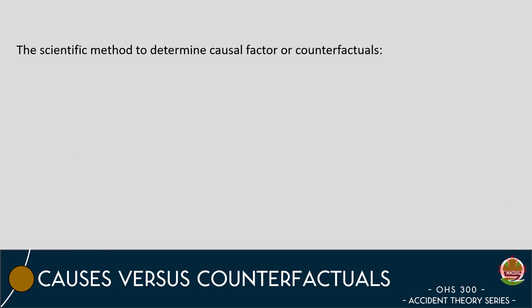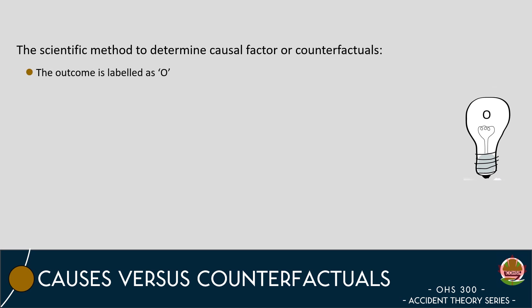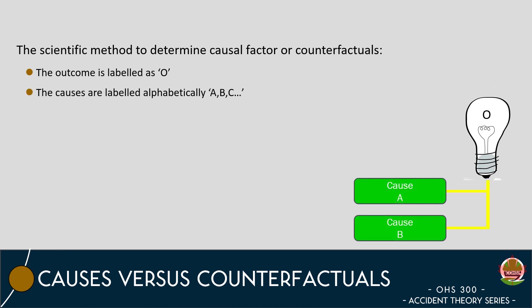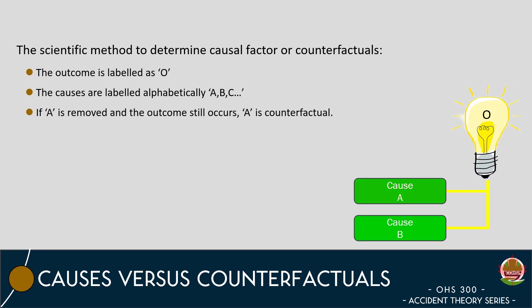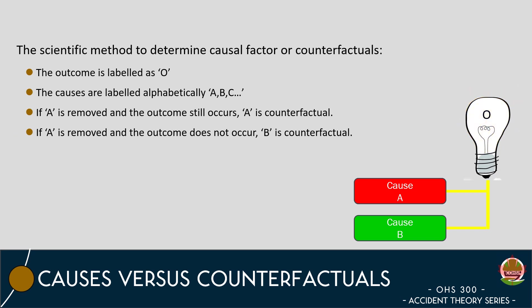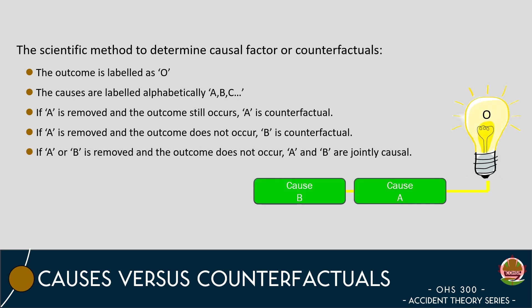The scientific method to determine whether an event is causal or counterfactual involves considering the outcome, which we can label as O, and all the potential causes that lead to the outcome, which we can label alphabetically. If the outcome had two causes, in this case they would be labeled as A and B, and we remove one of those causes, does the outcome change? If cause A is removed and the outcome still occurs because of B, then B would be causal, and A would be counterfactual. If we remove cause A and the outcome no longer occurs, then B would be considered as a counterfactual. In a scenario where both A and B are required to achieve the outcome, then they are jointly causal.